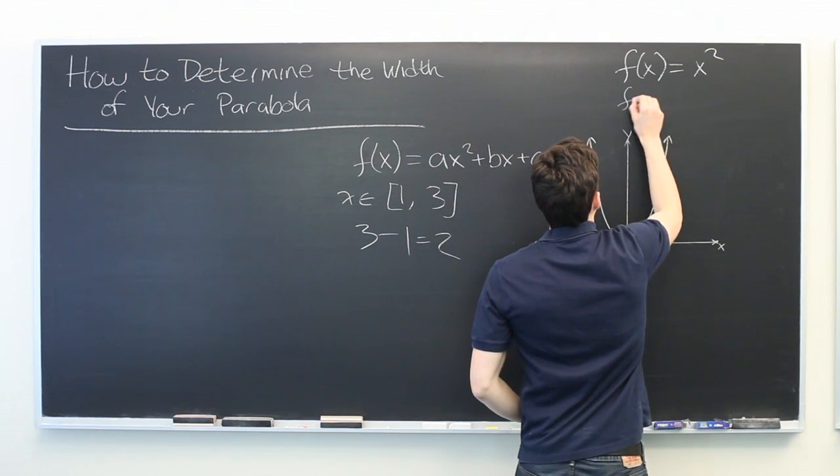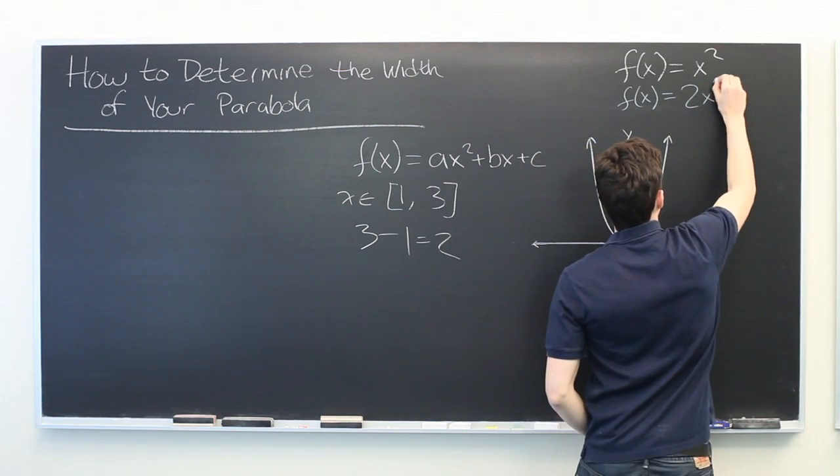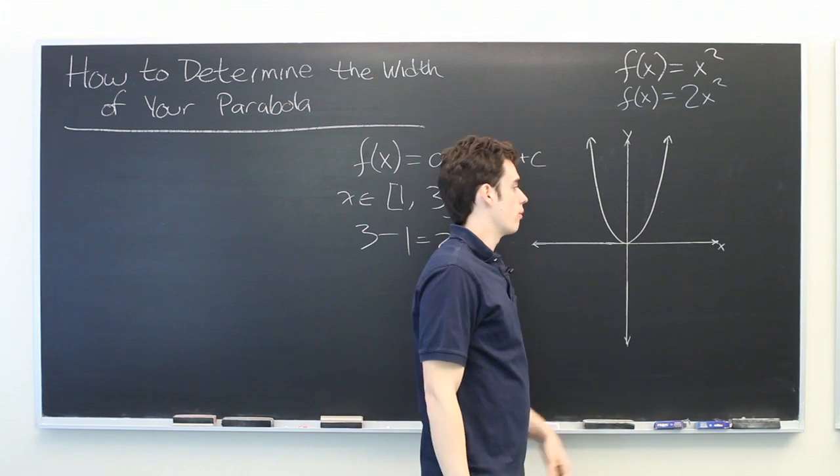So let's say we have f(x) = 2x². We are doubling our leading coefficient.